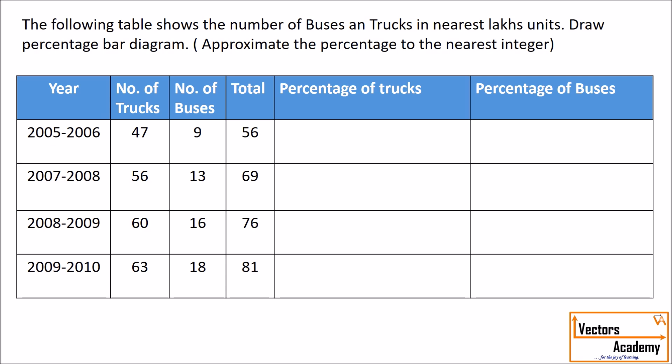Now, how do you calculate the percentage of any category? The percentage value is found out by the formula: value upon total, into 100. So the percentage of trucks will be found out by the number of trucks upon total into 100.